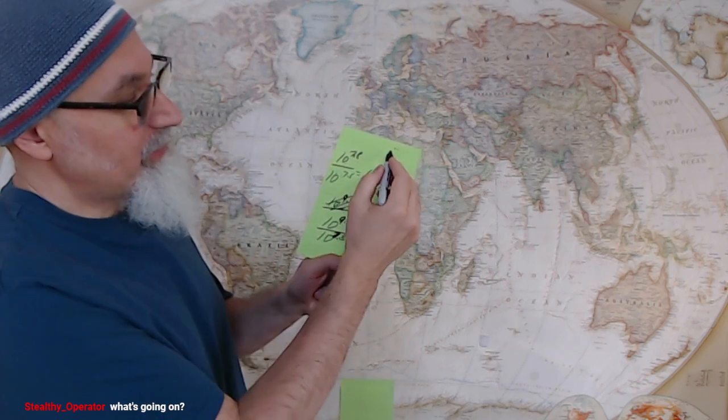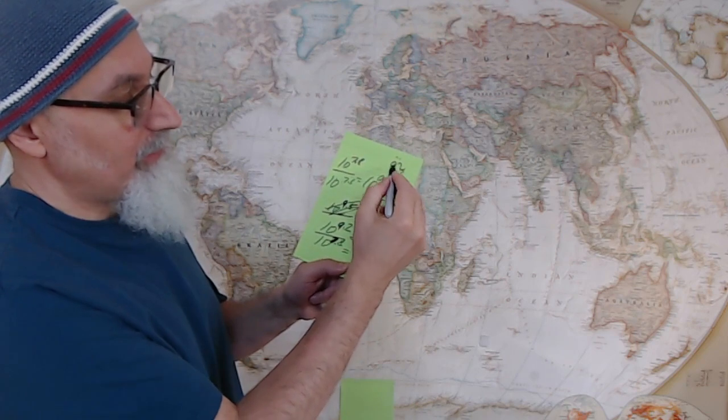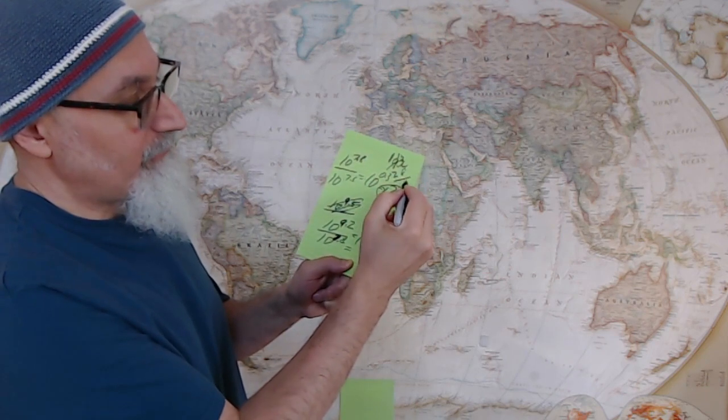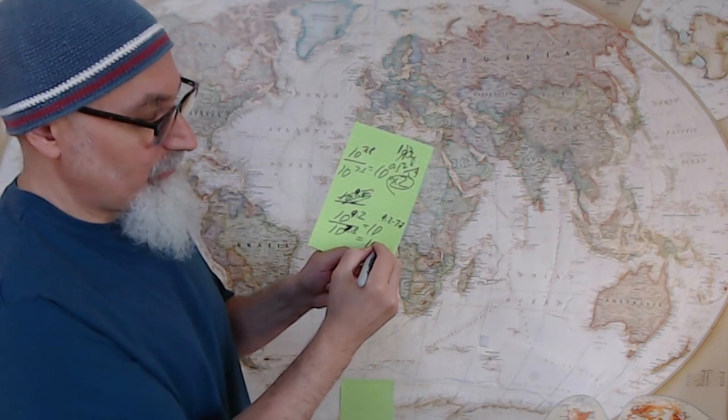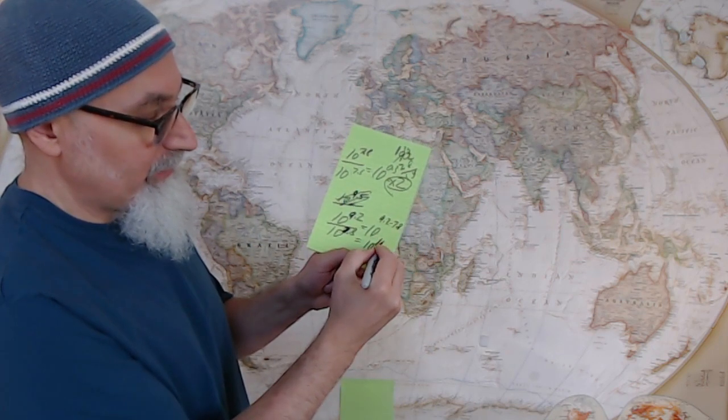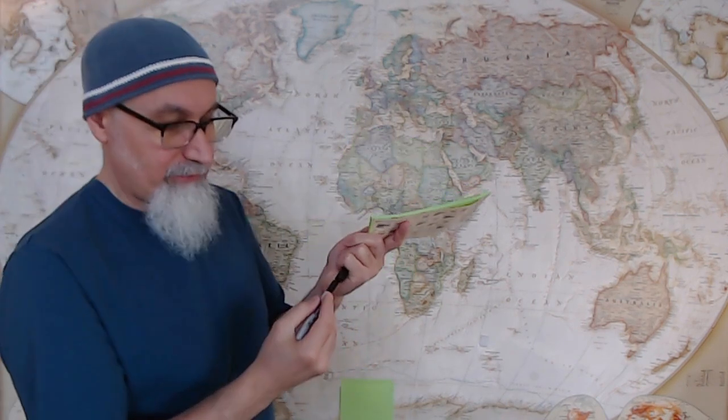So what is that subtraction? 9.2 minus 7.8. That's 1.4. 10 to the power of 1.4. Okay, punch down your calculator, see what you get. Apologies, not reading the chat. I get distracted.